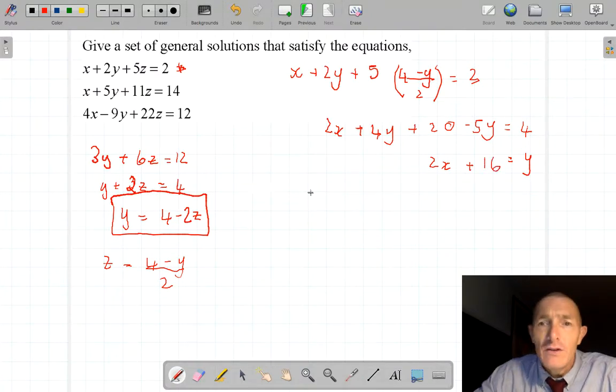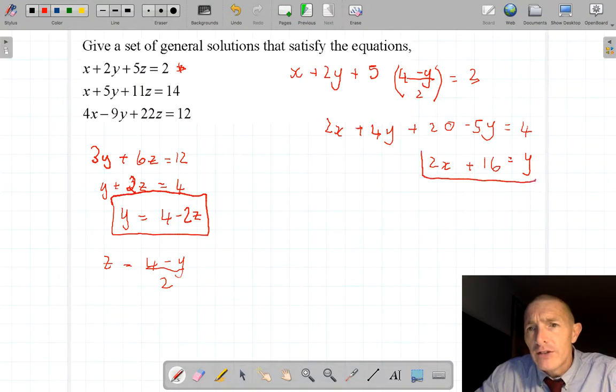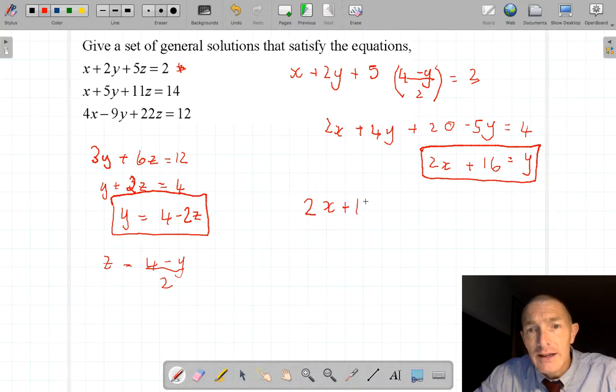So now I can see that I've got this as y equals, and I've got an x in there. I've got the other box over on this side as y equals, and my general set of equations now becomes 2x plus 16 equals y equals 4 minus 2z.